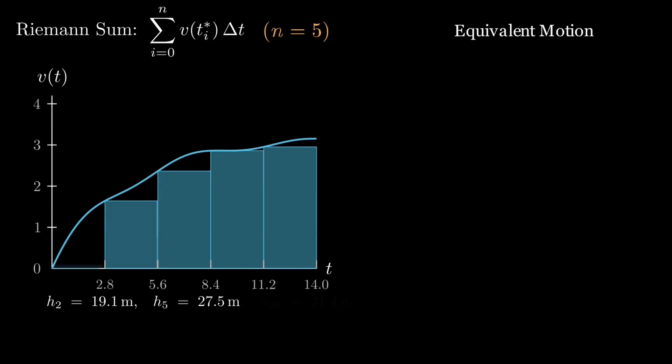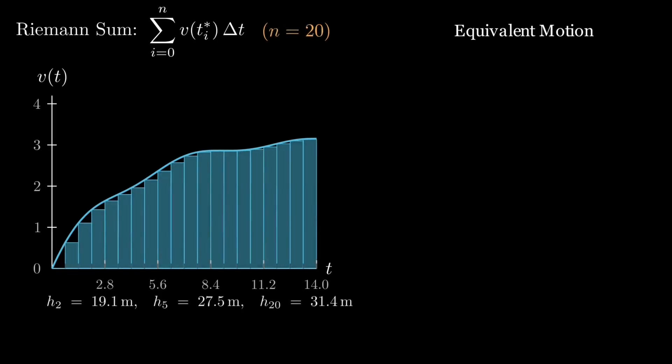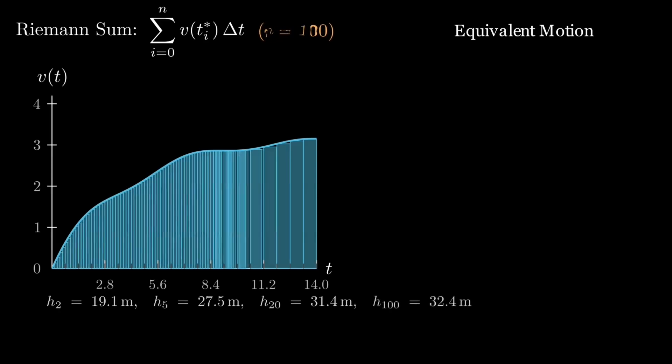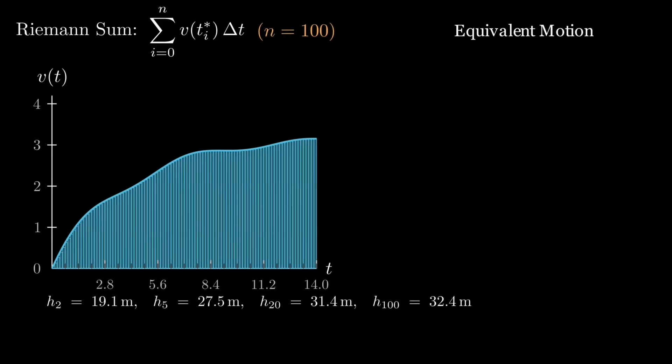As we keep increasing n, the equivalent motion grows closer to the true climb, like you can see here for n equals 20, but it's still chunky. With a hundred slices though, the staircase tracks the curve so closely that the piecewise motion becomes almost smooth, and the accumulated height converges.